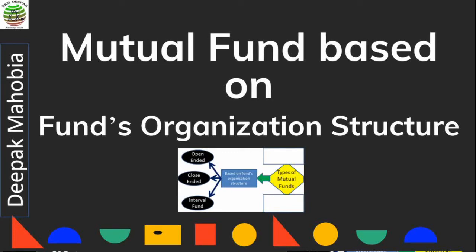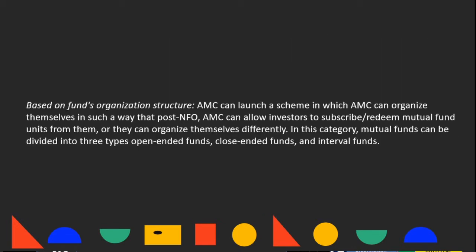Mutual fund types based on fund's organizational structure. AMC can launch a scheme and organize themselves in such a way that post-NFO, AMC can allow investors to subscribe or redeem mutual fund units from them, or they can organize themselves differently. In this category, mutual funds can be divided into three types: open-ended funds, close-ended funds, and interval funds.